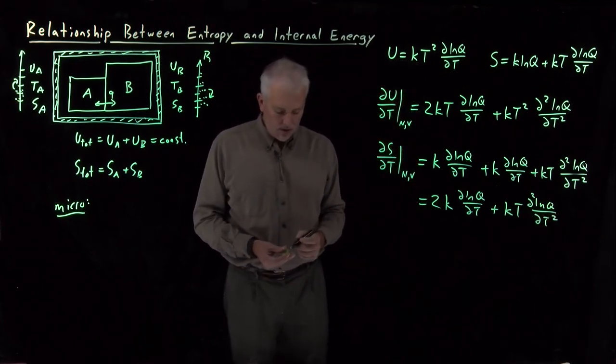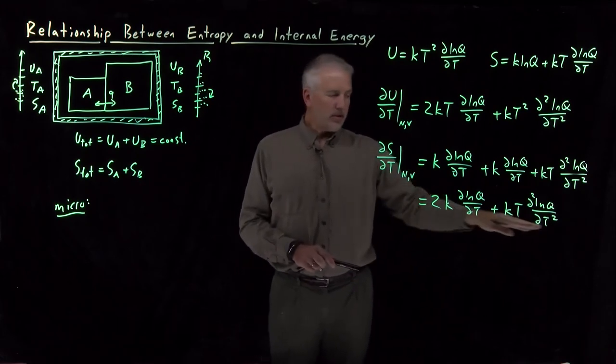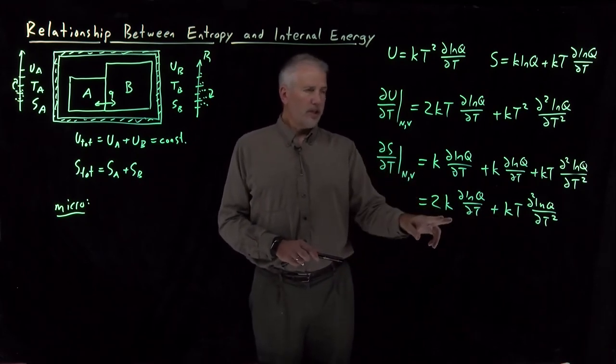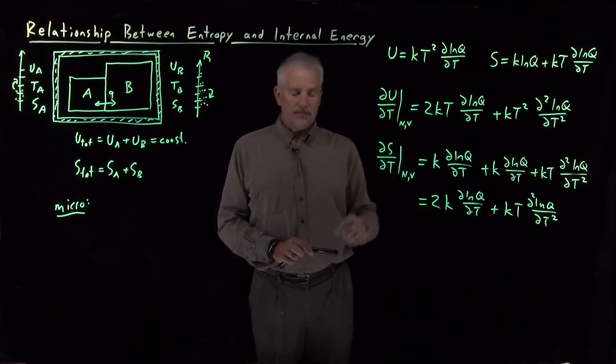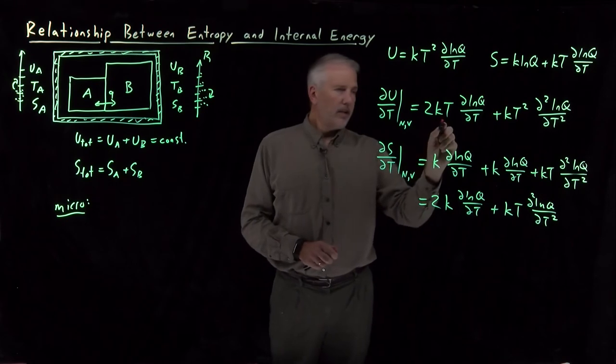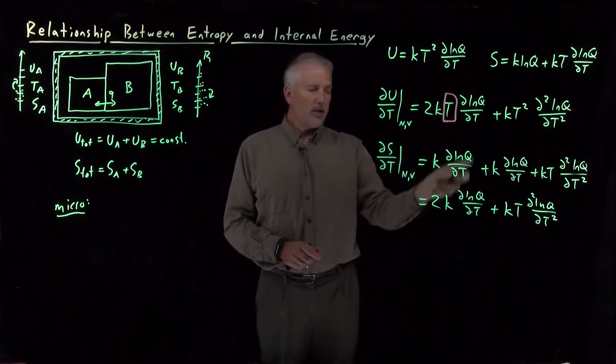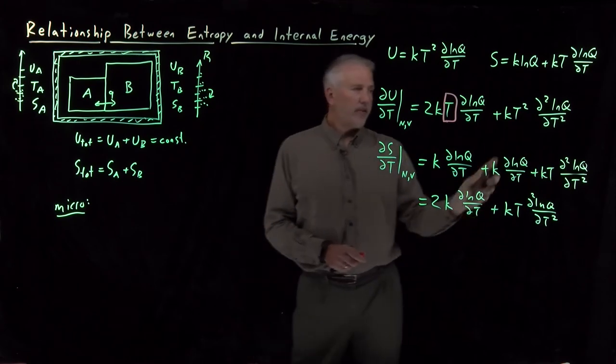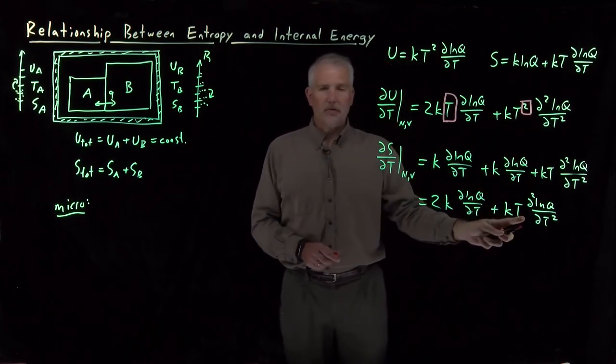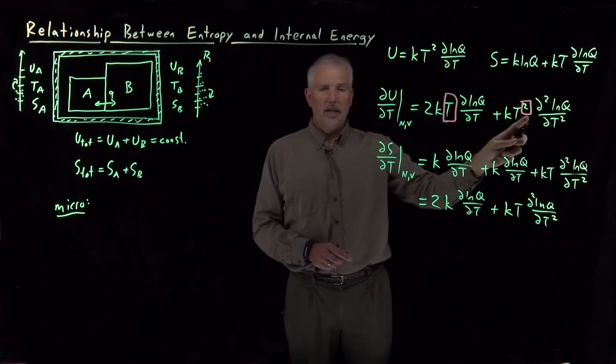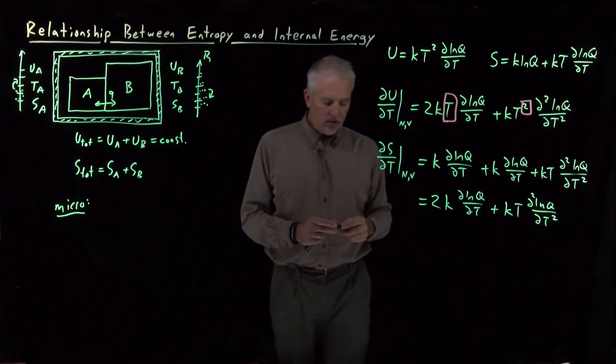But now, notice this expression, dS dT, which is equal to these two terms, looks very similar, not exactly the same, but very similar to the term we got for dU dT. In fact, if I just ignore that T, 2k d log q dT looks like this one. And, if I ignore one of these T's, I have a T squared here, but only a single factor of T down here. If I ignore the second T up here, this term looks exactly like this term. So, in other words, if I write